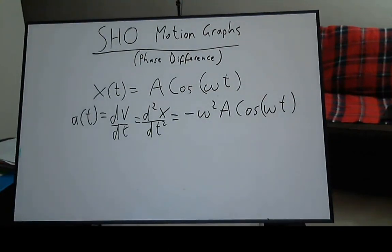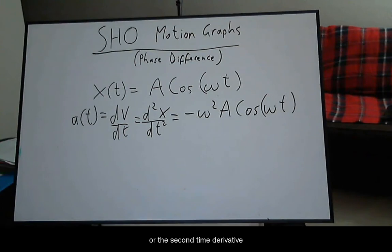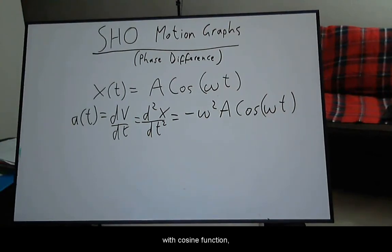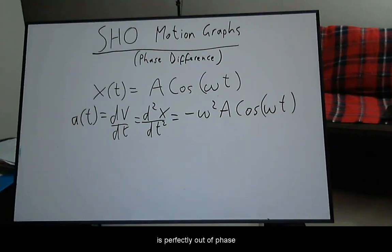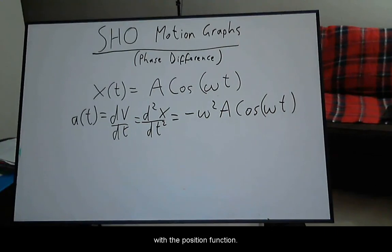Acceleration is the time derivative of the velocity function, or the second time derivative of the position function. It is sinusoidal with a cosine function and the magnitude of the amplitude as omega squared A. The negative sign means that the acceleration function is perfectly out of phase by 180 degrees or pi radians with the position function.